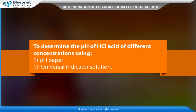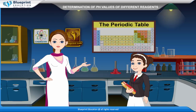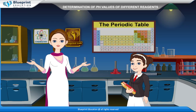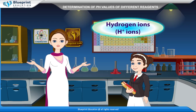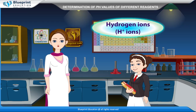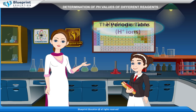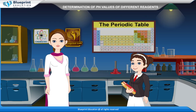To determine the pH of HCl acid of different concentrations using pH paper and universal indicator solution. Acids are substances that produce free hydrogen ions — H⁺ ions — when dissolved in water.